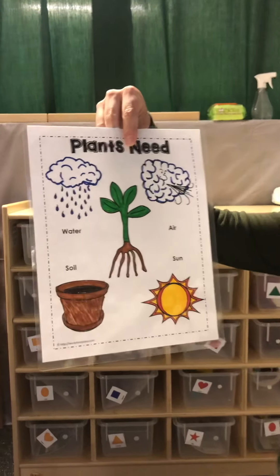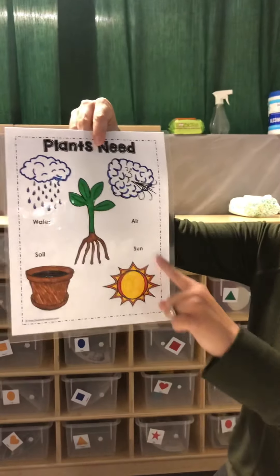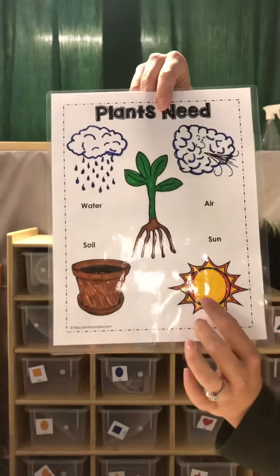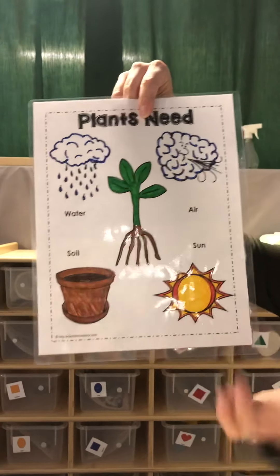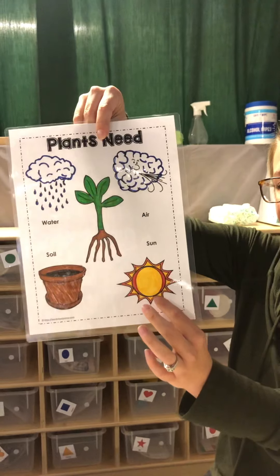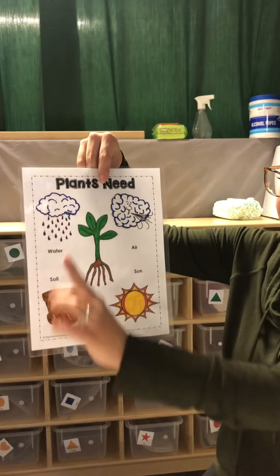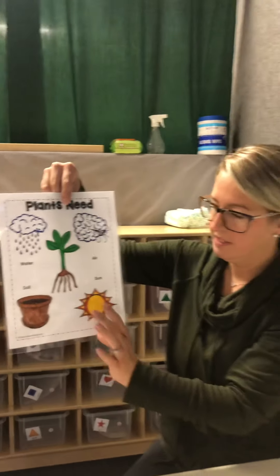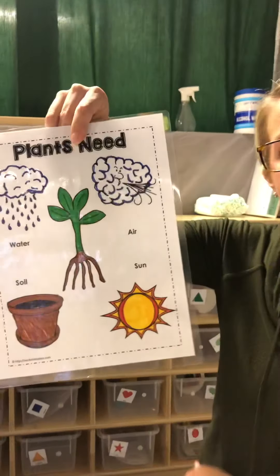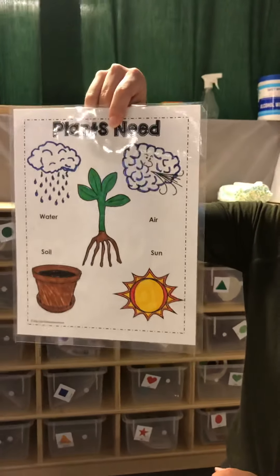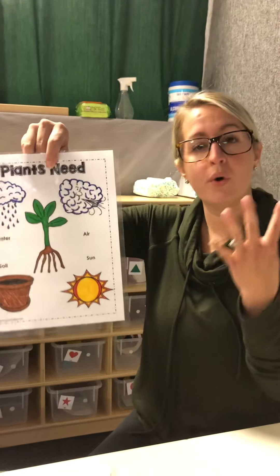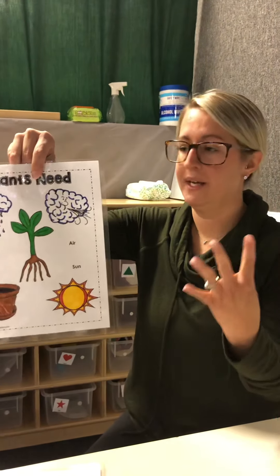Good job. Our next thing is this right here — and you do remember that from our book — that is the sun. Plants need the sun. So far we have water, soil or dirt, the sun, and then it needs air. Our plant needs air, and that's all around us. Those are the four things that a plant needs.